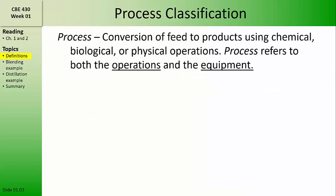We've used the term process already. In this class, we'll use the term process to refer to the conversion of some feed stream to some products using chemical, biological, or other physical operations. The process can refer to both the operation — that is the changes that are occurring in the system — as well as the equipment used to affect that change, or the unit operations.